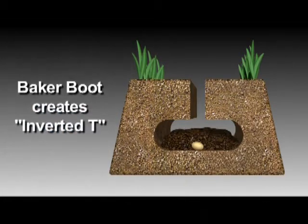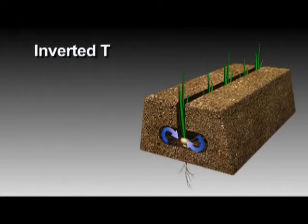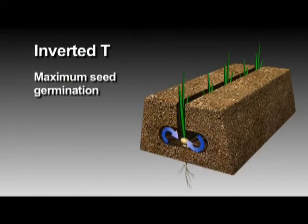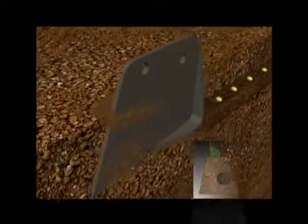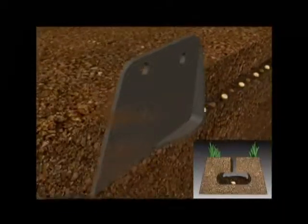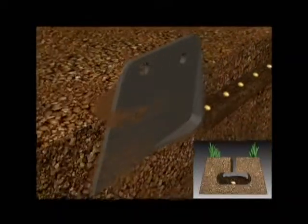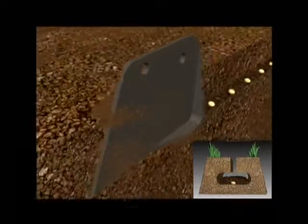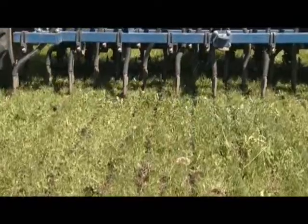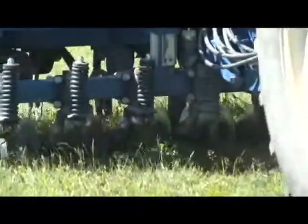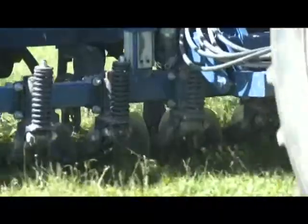The secret of the Agro Drill is the inverted-T, or Baker Boot, soil opener. It produces the most ideal environment for maximum seed germination, plant establishment, and moisture retention. The seed is placed with the combination of the coiled tine and the Baker Boot. The vibrating action of the tine produces a fluffing effect as the Baker Boot opener places the seed in the vapor chamber. The narrow surface opening reduces moisture loss, and compacting is virtually eliminated as the opener passes through the soil.